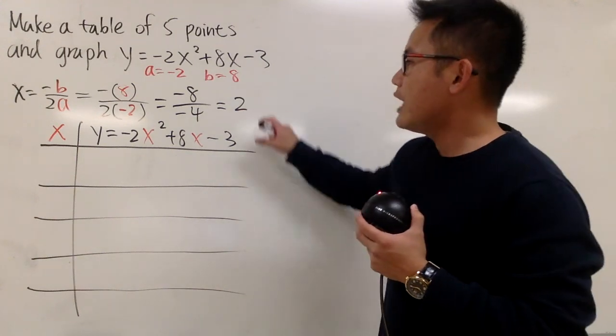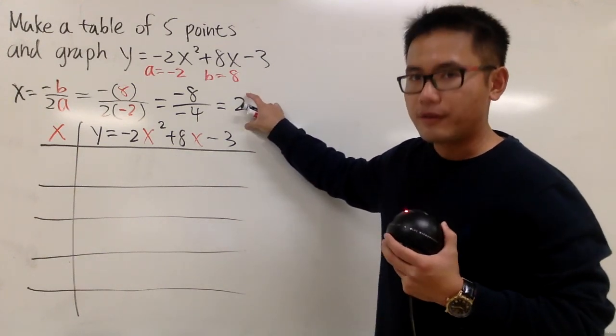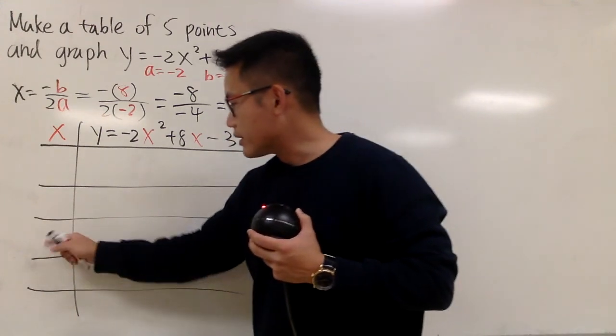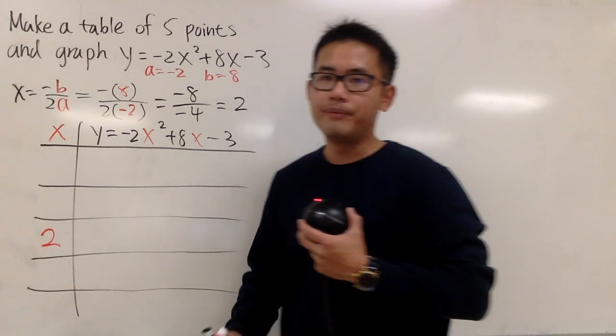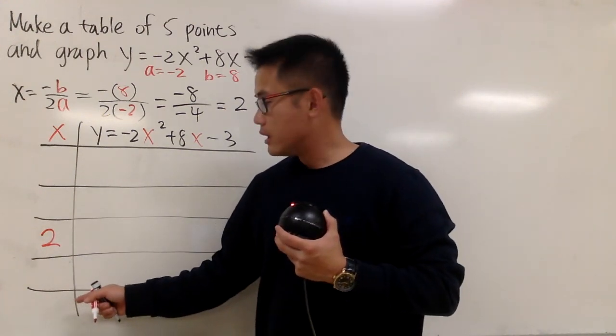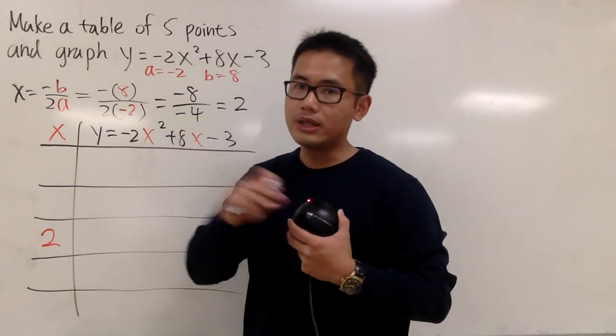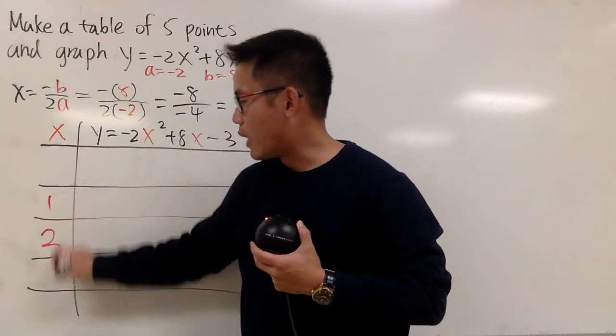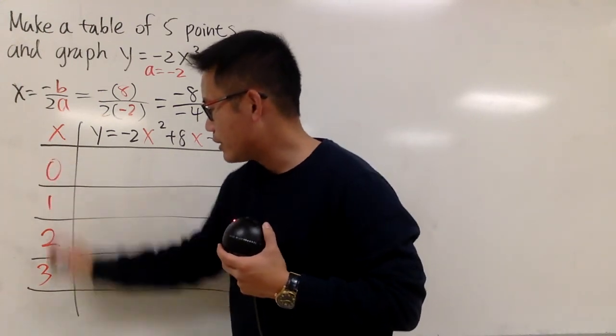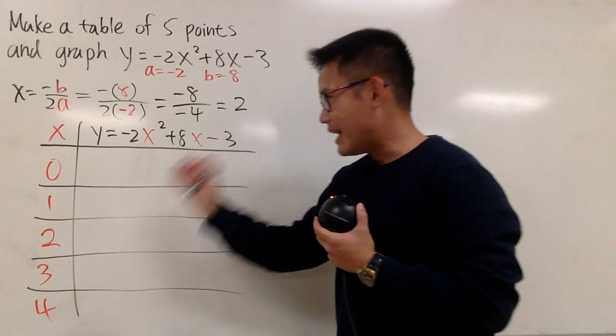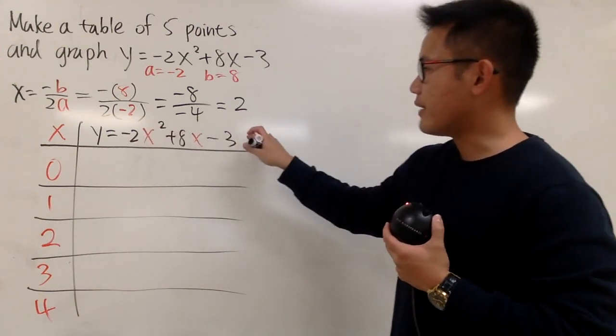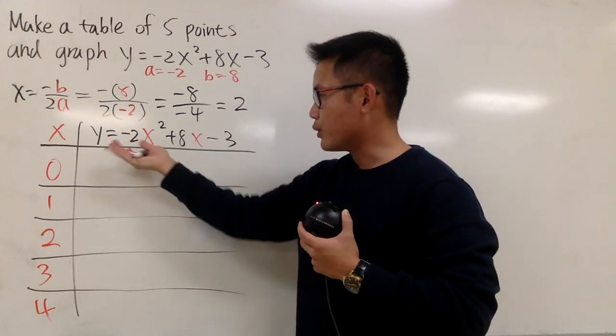And now here's the deal. Whenever you find out the x value of the vertex, you always put this right in the middle, namely on the third spot right here. So we have a 2 right here. And then you are going to pick the neighbor numbers. So by that, I mean when you have 2, toward the left and toward the right, we will have 1 and 3. And then you go ahead and do more. You have 0 and 4 like this. And these are the x values that we are going to use. We are plugging this into the x values right here and then we will get y values.